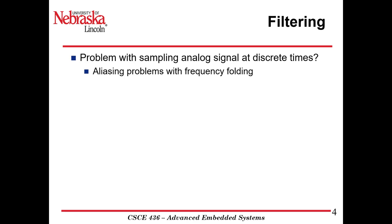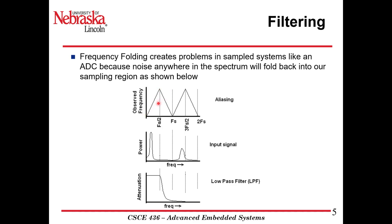Some of the problems when you take a sinusoidal analog signal and sample it at discrete times is the aliasing problem, especially when you talk about frequency folding. Here's a frequency chart showing amplitude versus frequency. If we sample a signal at Fs, sometimes the noise at upper frequencies can fold back into the earlier harmonics — the second harmonic and the first harmonic for the sampling rate. Noise here can fold back to Fs over 2.